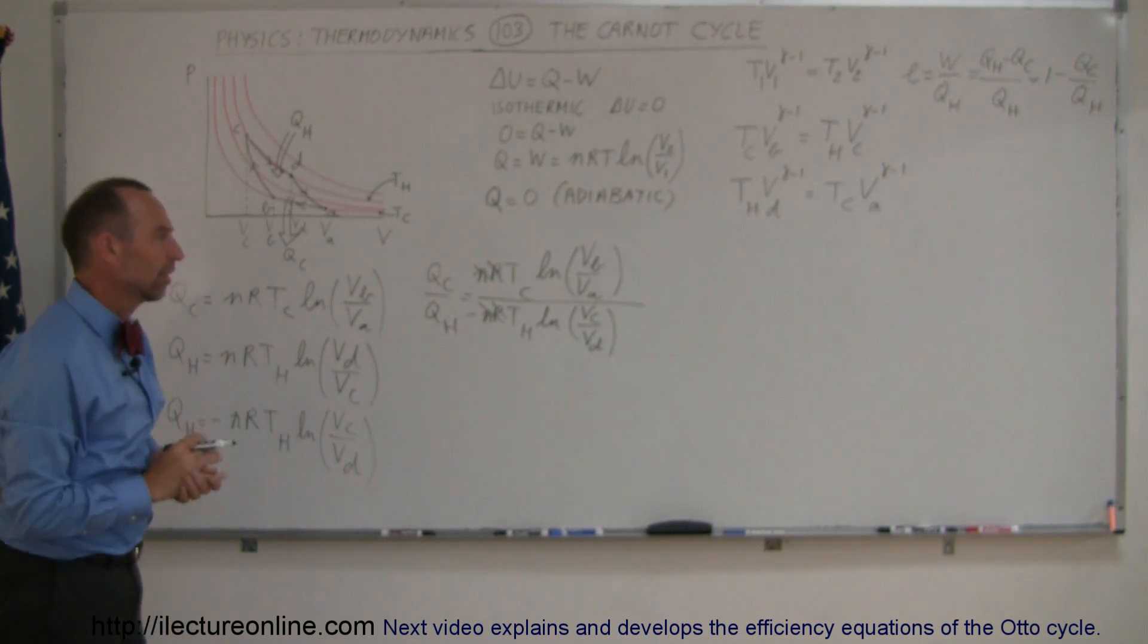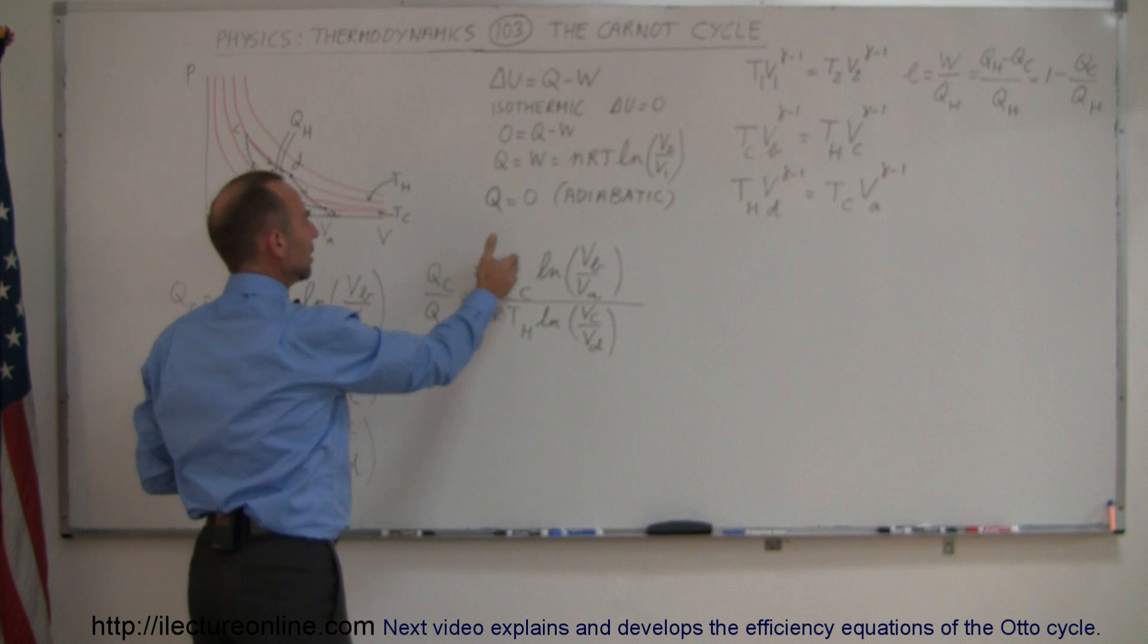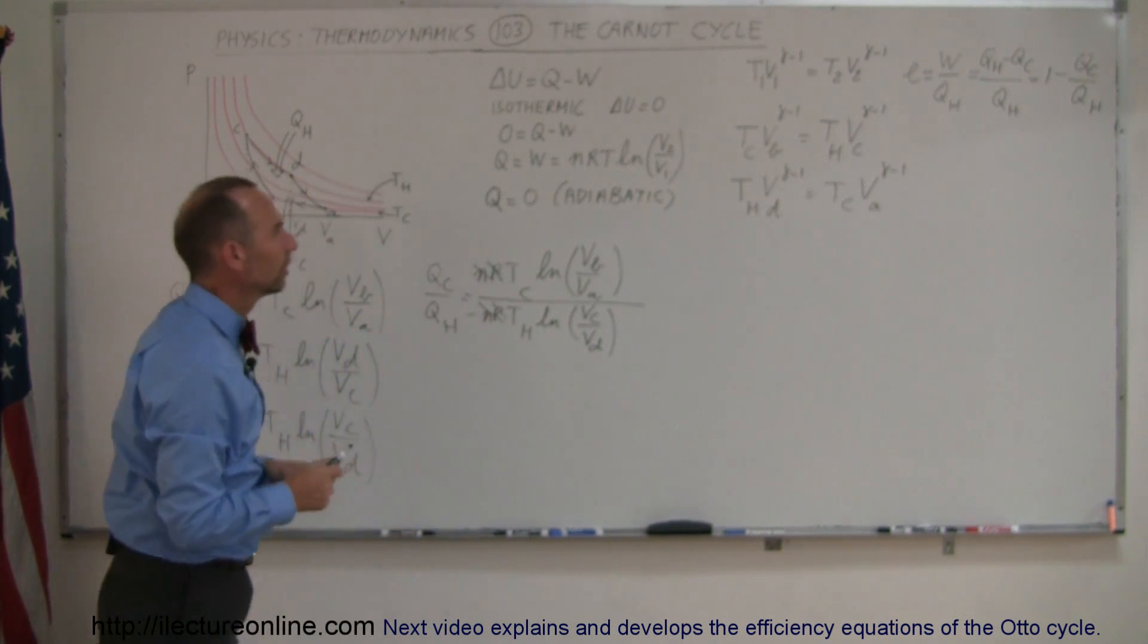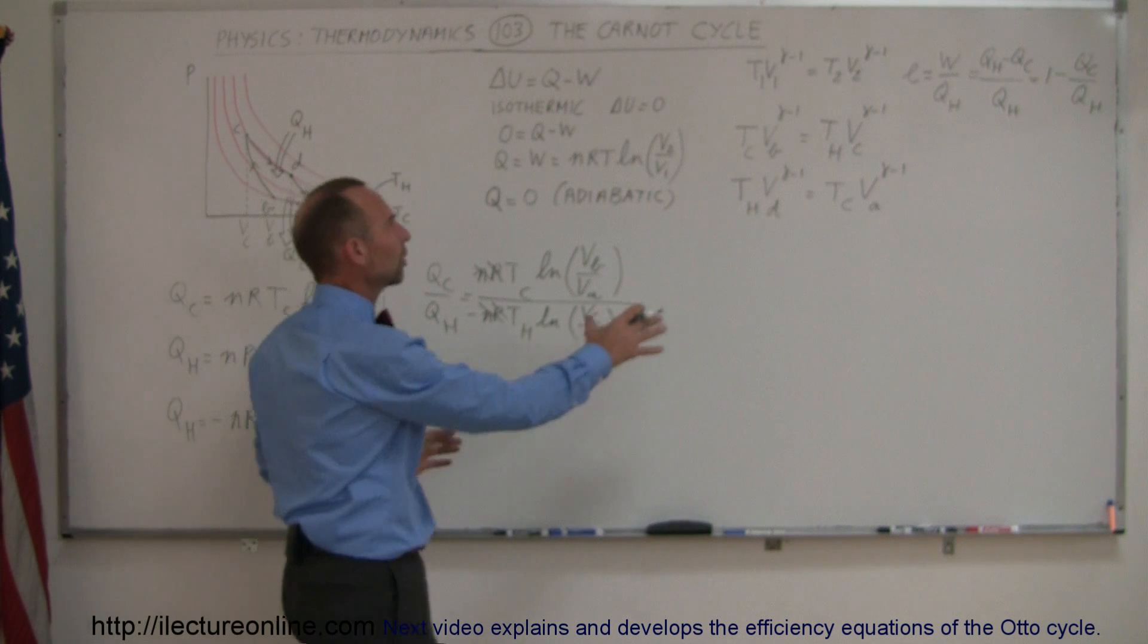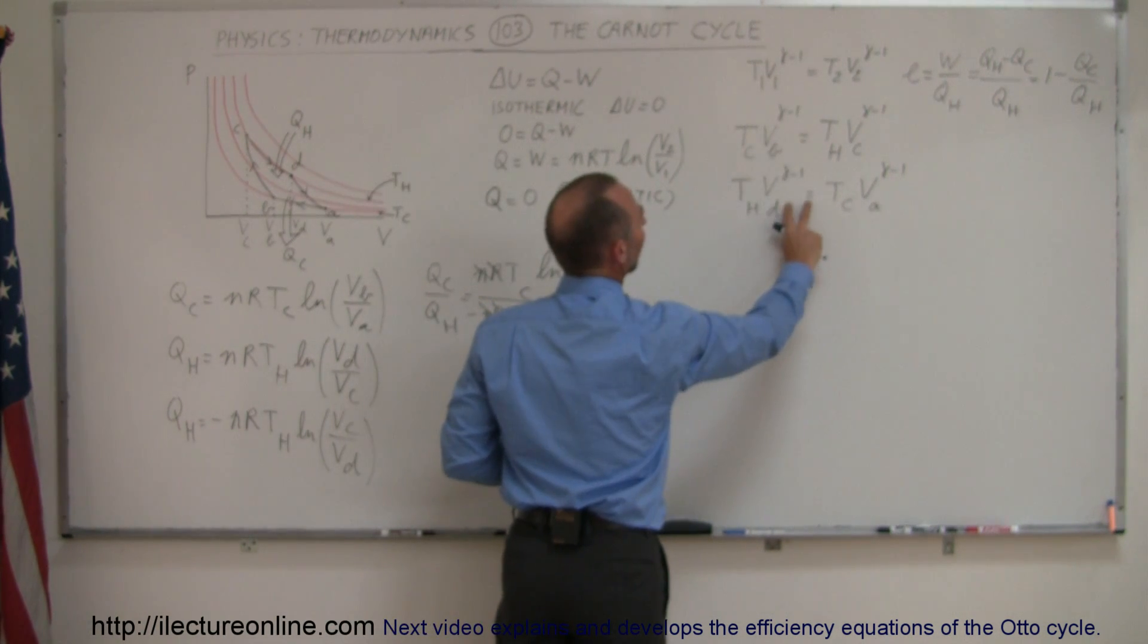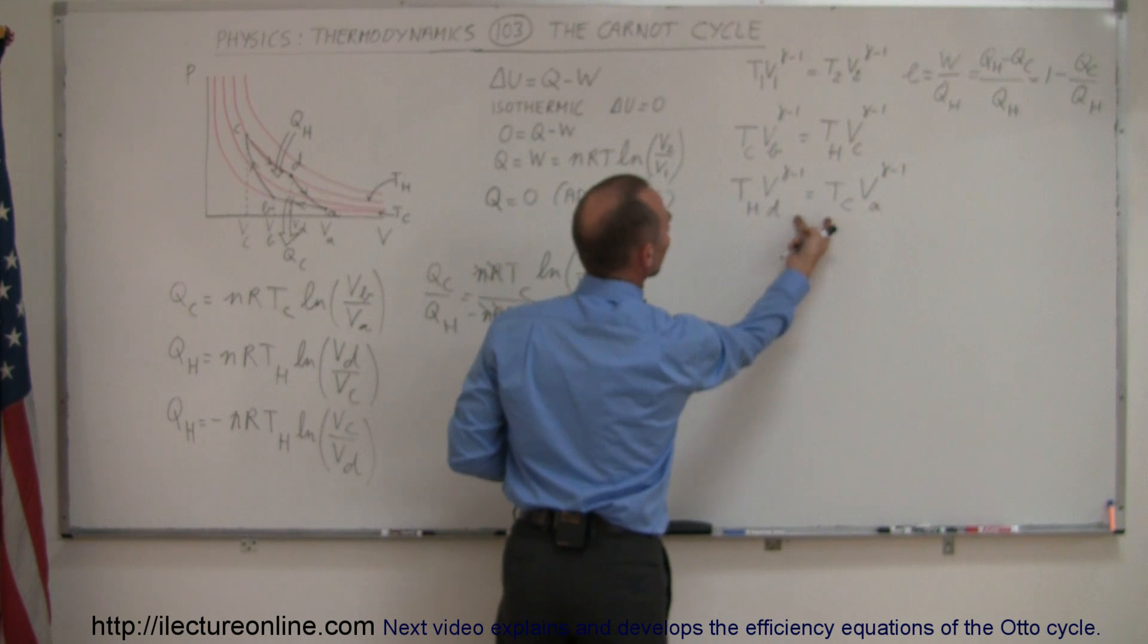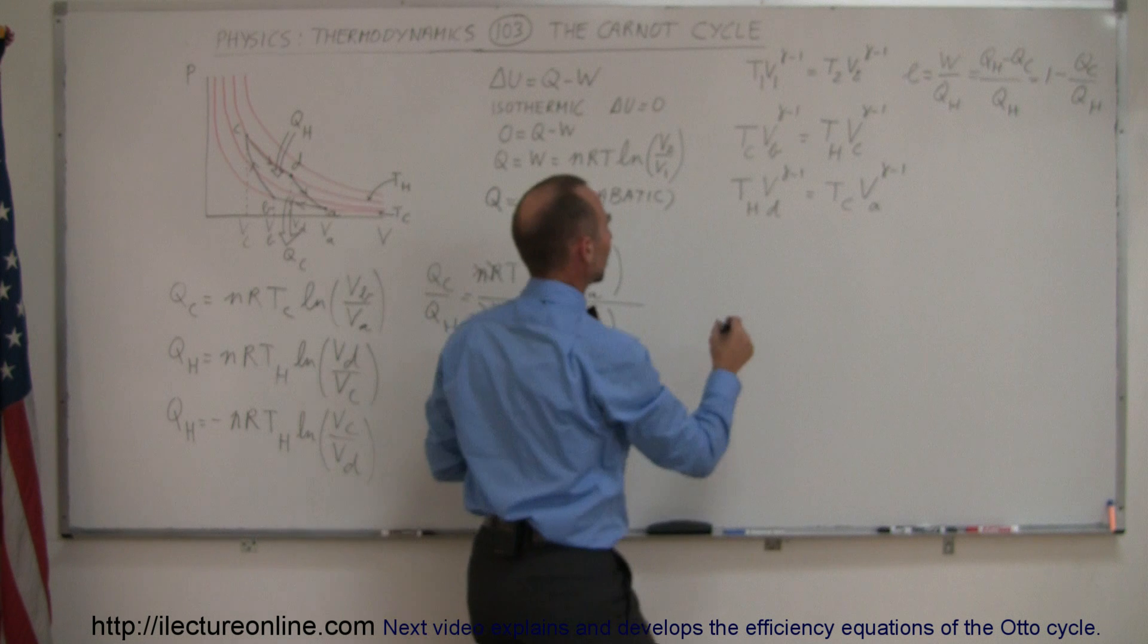Now, what I need to do is I need to somehow get rid of the T_c and T_h here. So how do we do that? How do we get rid of the temperatures in these equations right here? Well, if I divide this equation by this one, but turn around, then I have T_c's lined up, I have T_h's lined up, and then I think those will drop out. So let's try that.